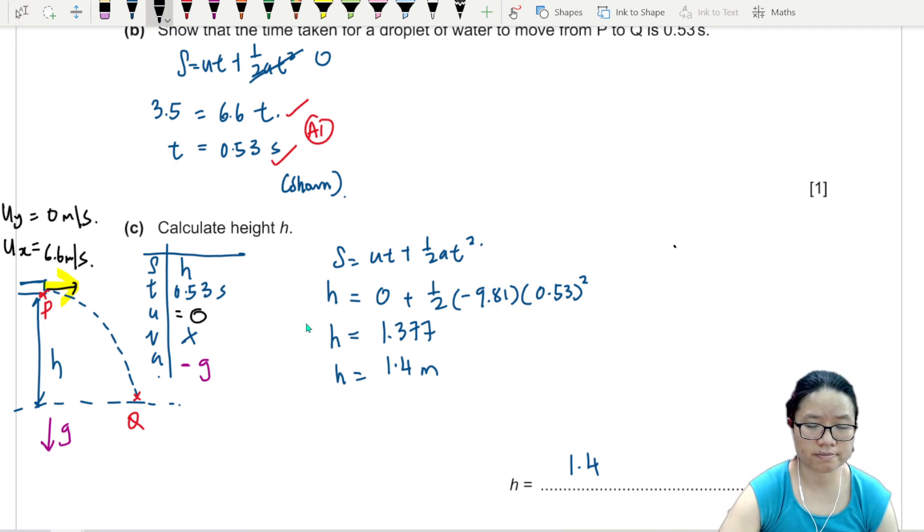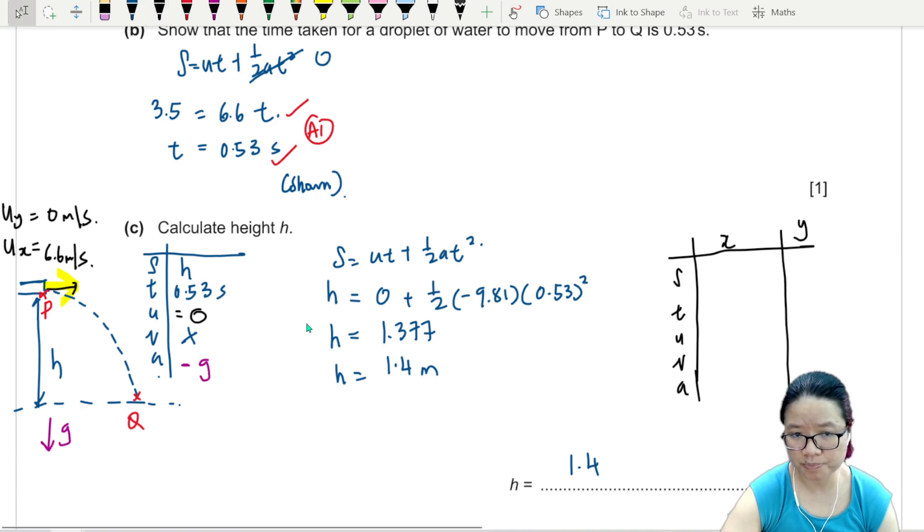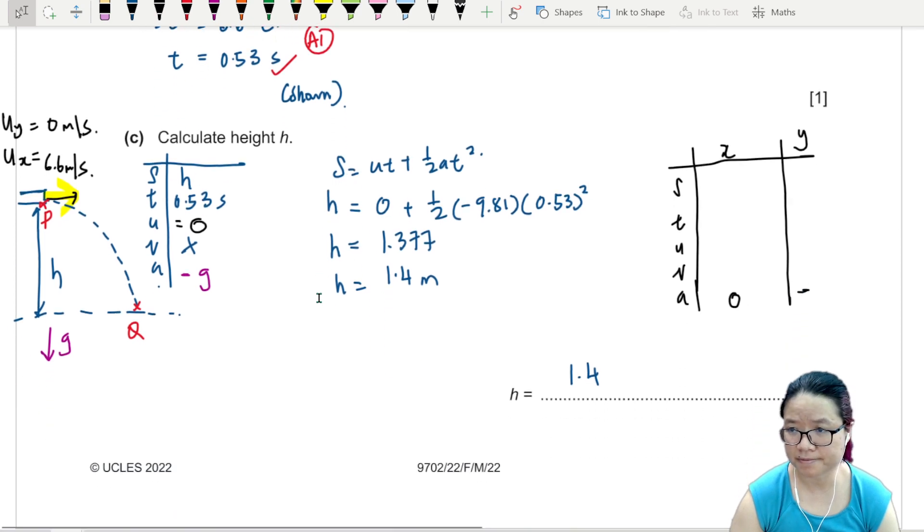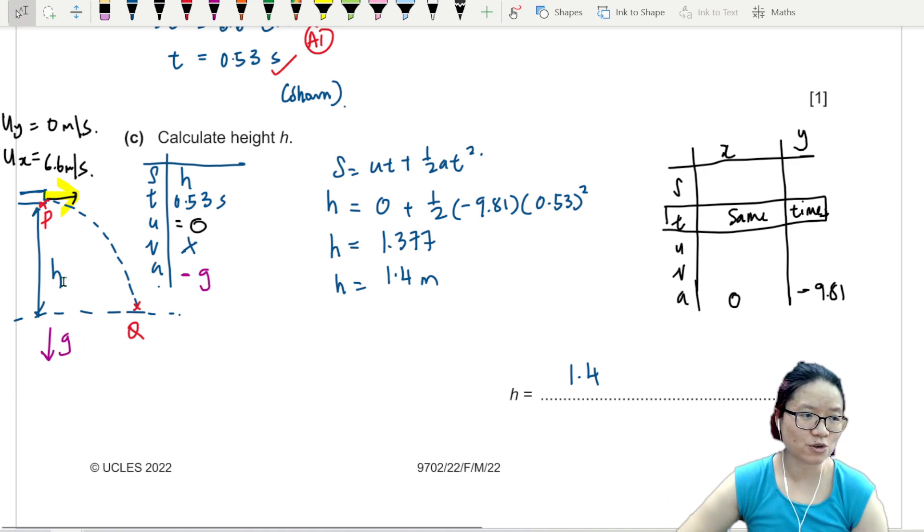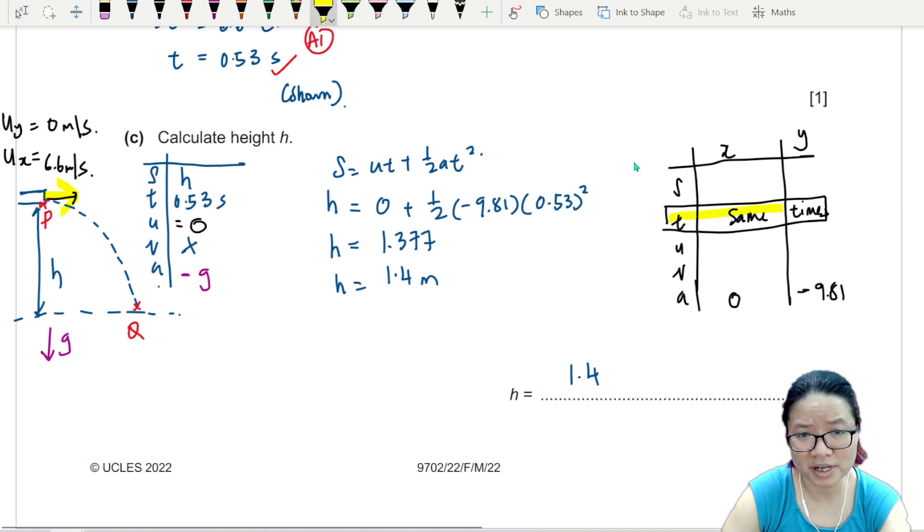A few takeaways here: when it comes to projectile motion, for the x component, let me list down for you. In the template, right? Let's say you're talking about x and y component. Let's refresh here. This is always 0. This is always negative 9.81. And they will share the same time. Because there's only one object. It can only be at one place at one time. So if it takes 0.53 seconds to travel from P to Q in the horizontal direction, so will it in the vertical direction.